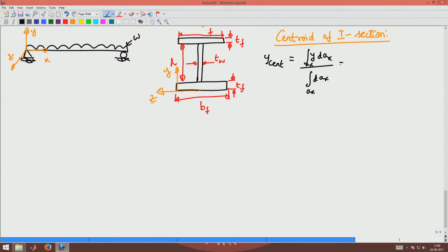Basically doing that I write it as Bf times Tf, and the center of this would be Tf by 2. I know that from the previous analysis for the center of a rectangular section. So this times Tf by 2 is for the bottom flange.